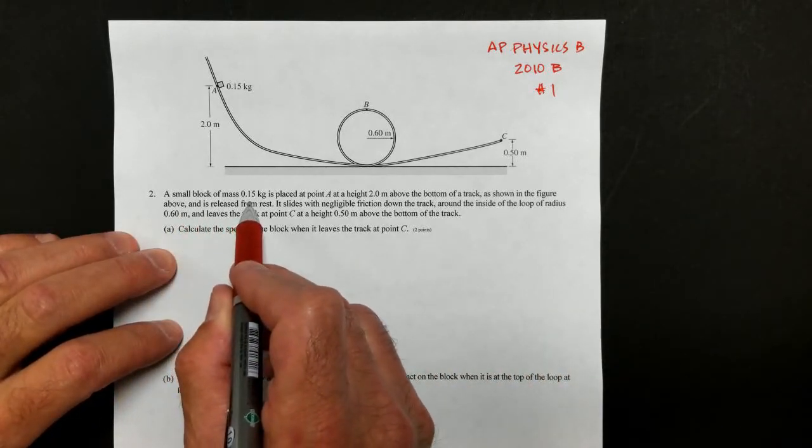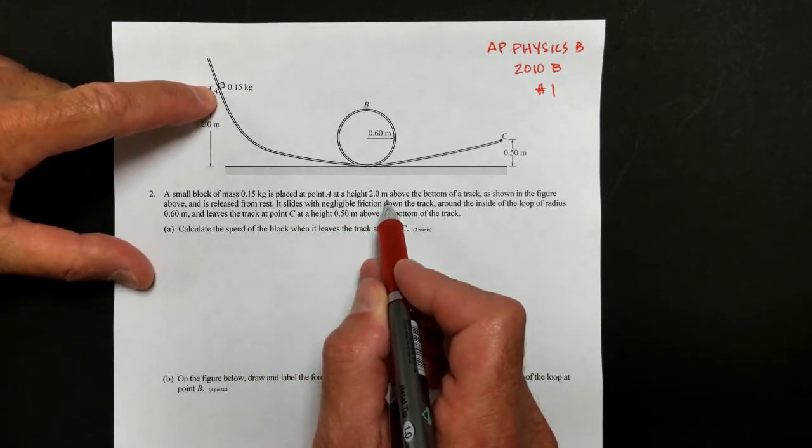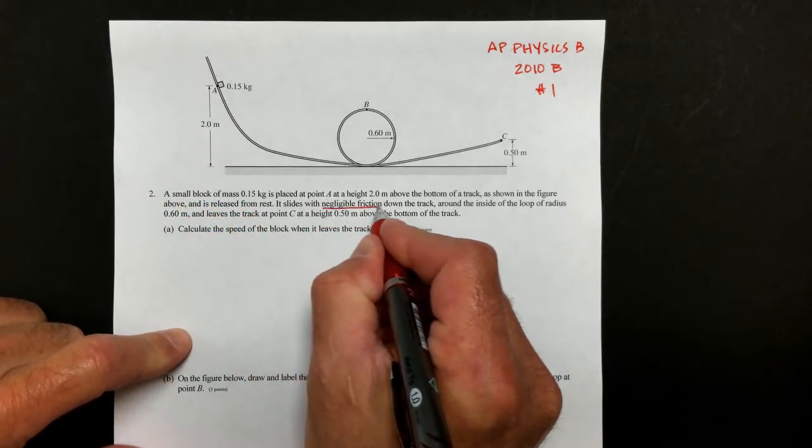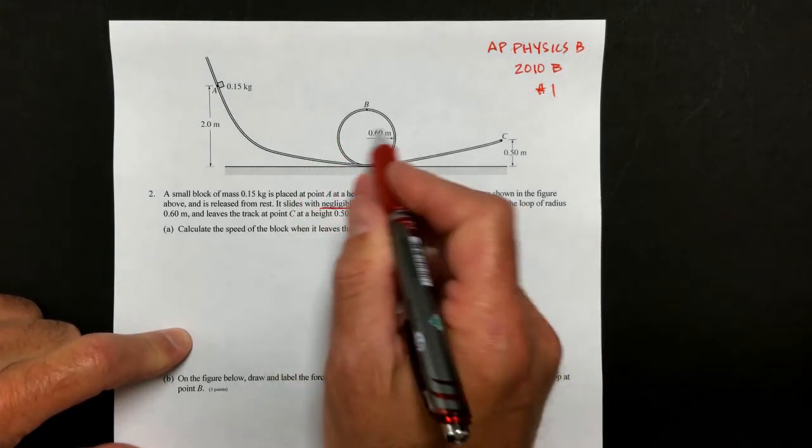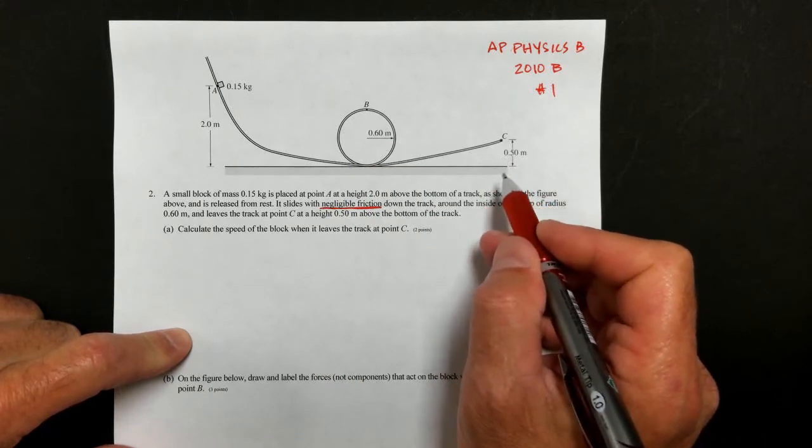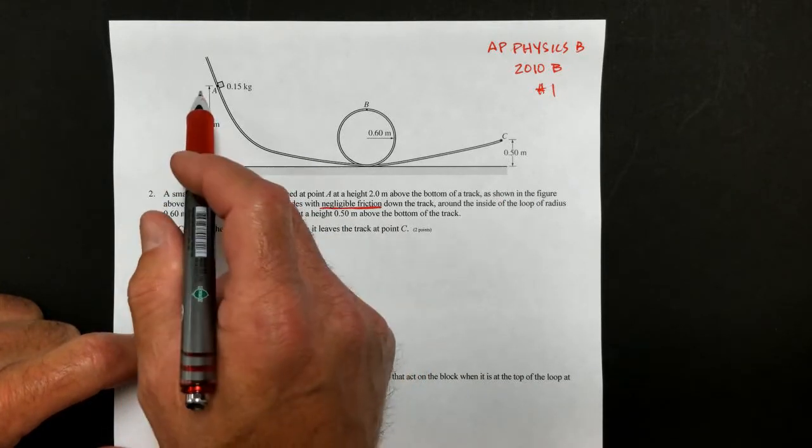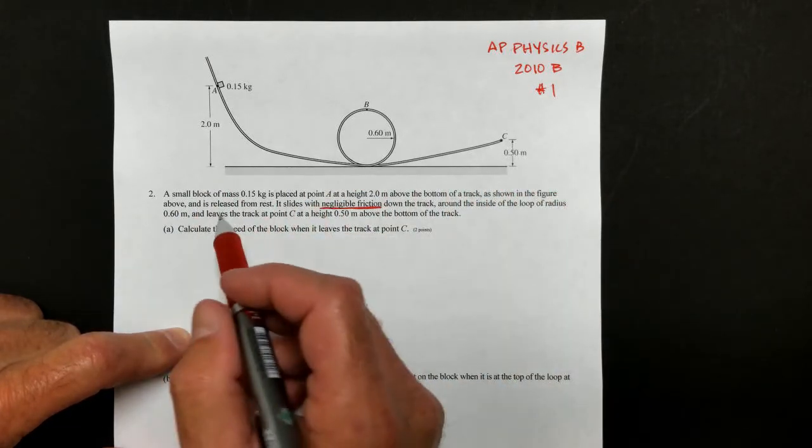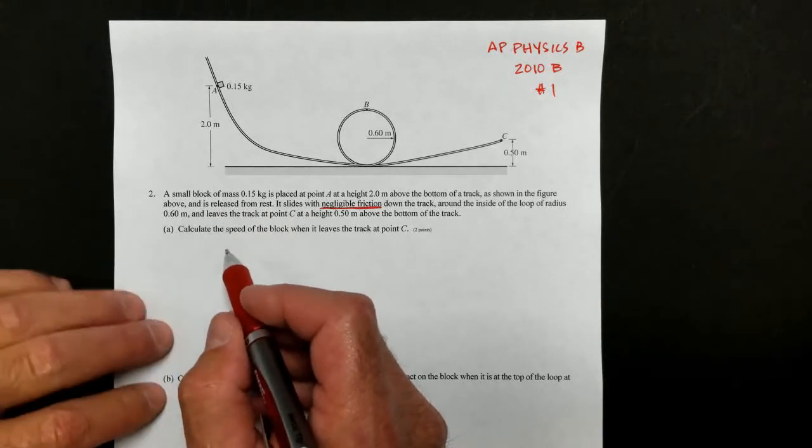Small block of mass 1.15 kilograms placed at point A at a height 2 meters above the bottom of the track, as shown in the figure. It is released from rest. That's important. It slides with negligible friction, so we're not going to have to worry about non-conservative work. Around the inside of the loop of radius 0.6 meters and leaves the track at point C, a height of 0.5 meters above the bottom of the track. They've labeled both the bottom of the track for both of these heights, so it goes from 2.0 meters up to 0.5 meters up. That's going to help you determine the change in height of that object, and therefore the change in potential energy and the gain in kinetic energy.